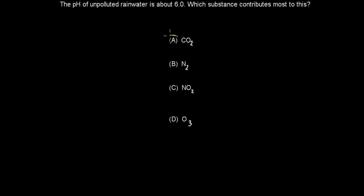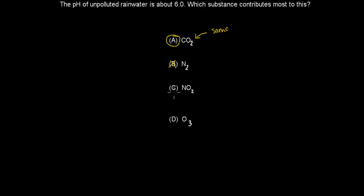Welcome back. The correct answer is A. The reason is that there is some carbon dioxide even in an unpolluted atmosphere — there's always going to be some. Nitrogen doesn't cause acidity. NO2 (nitrogen dioxide) comes from pollution, not unpolluted atmospheres. And O3 (ozone) doesn't really cause acidity. So the correct answer is A.